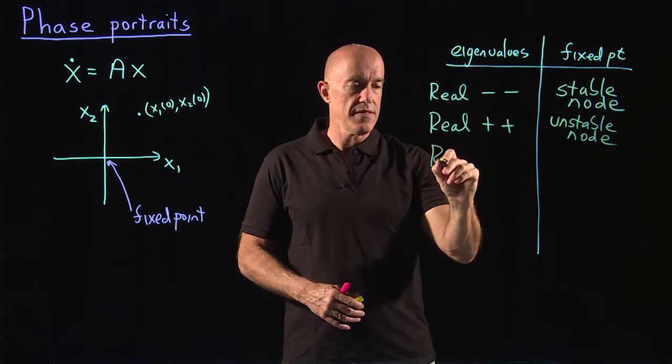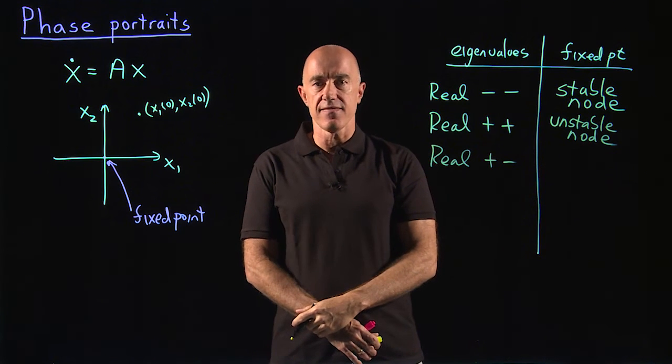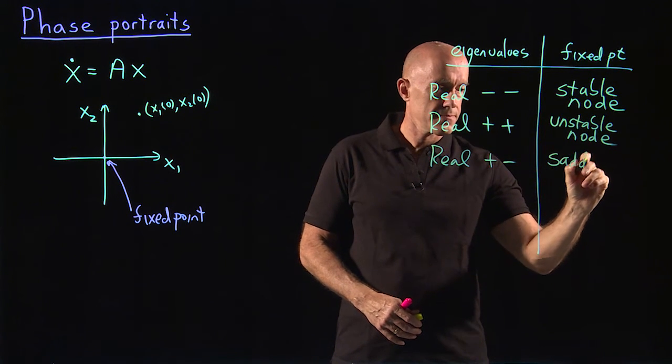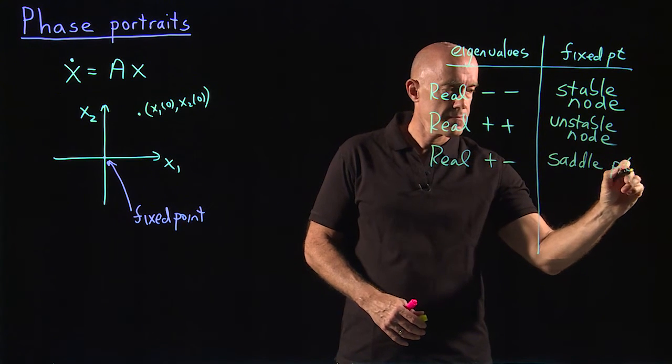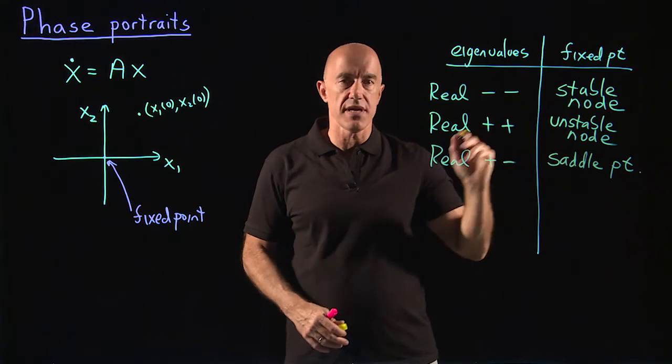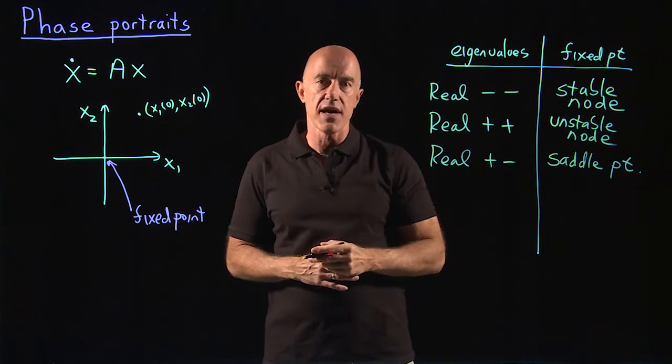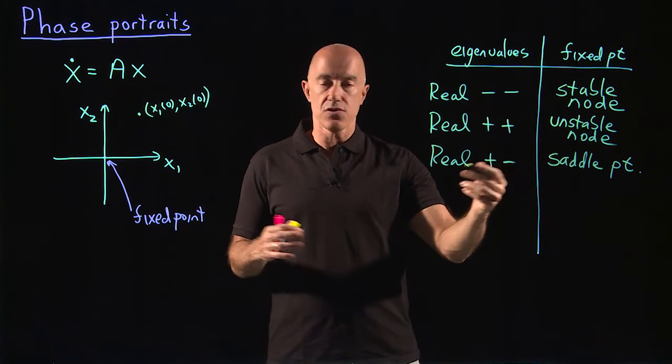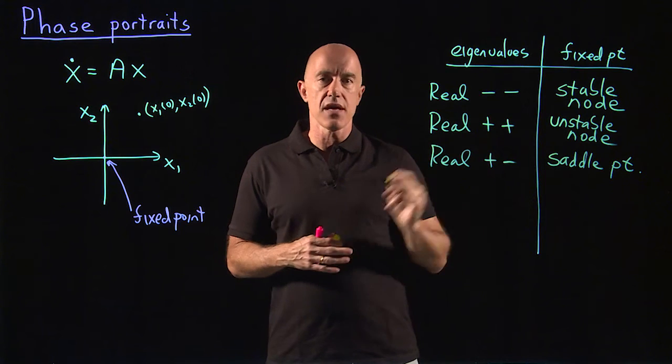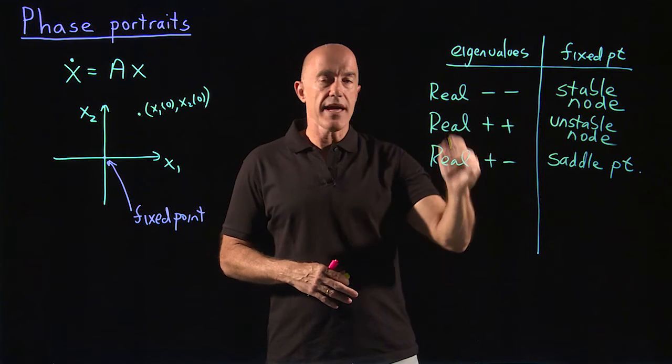The other case then is one positive and one negative eigenvalue. This is called a saddle point. The fixed point here is called a saddle point. We'll see what that means is that along one of the eigenvectors, the solution is going into the origin. And along another eigenvector, the solution is running away from the origin.